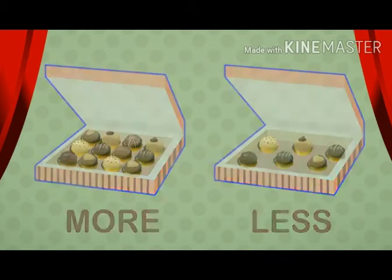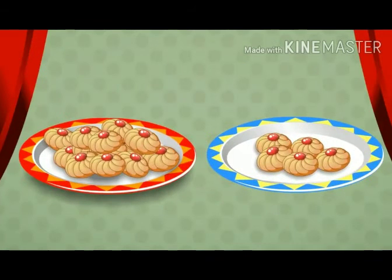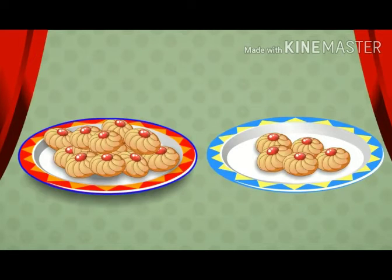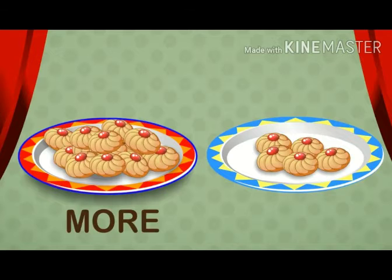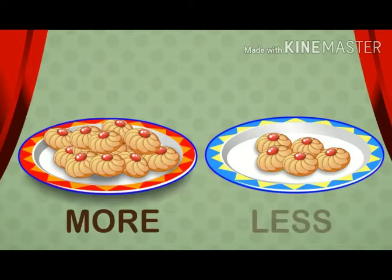In the same way, in this picture, the number of cookies in the left dish — that is the red dish — are more, and the number of cookies in the right dish — that is the blue dish — are less.